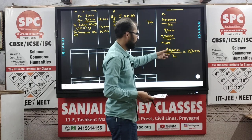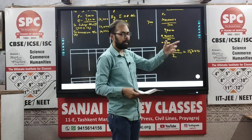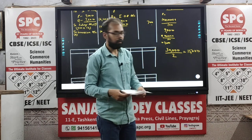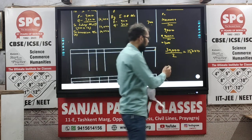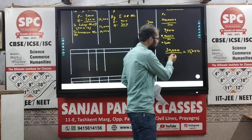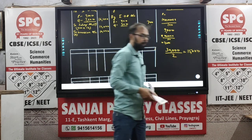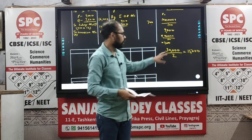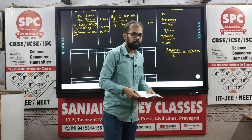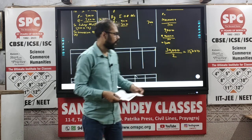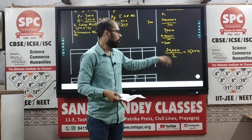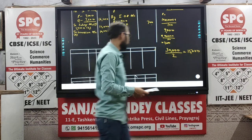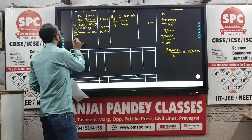Suppose if there were 3 partners distributing that profit equally, then 30,000 would have been divided by 3. In this case, since there are 2 partners distributing the profit equally, it has been divided by 2, giving 15,000 for P and 15,000 for Q.